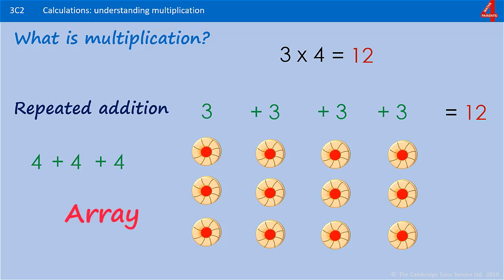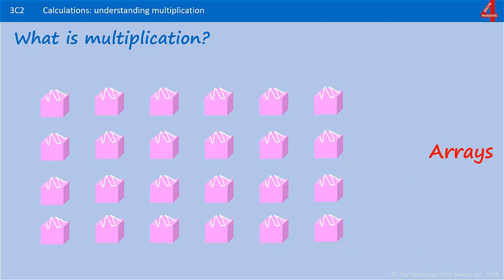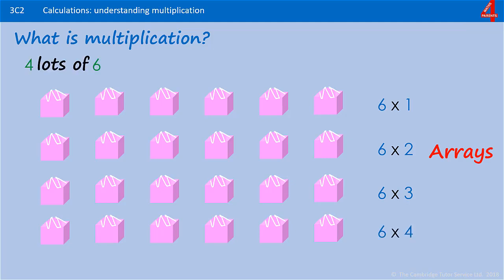We call these arrays, and I have worked with quite a few older pupils who don't understand what this is. Here we have an array using some cakes. Here we have 1 row of 6 cakes — 6 times 1. Here we have another row of 6 cakes, and a 4th row of 6 cakes — 6 times 4. So this is 4 lots of 6.